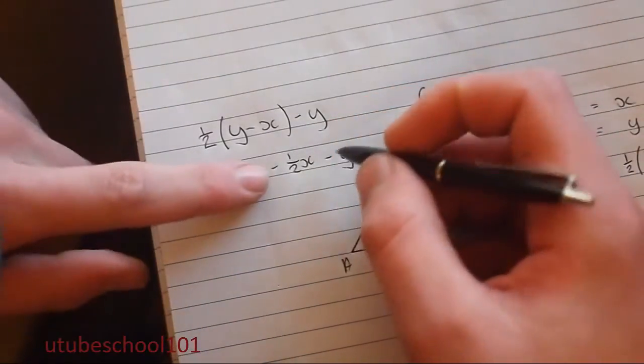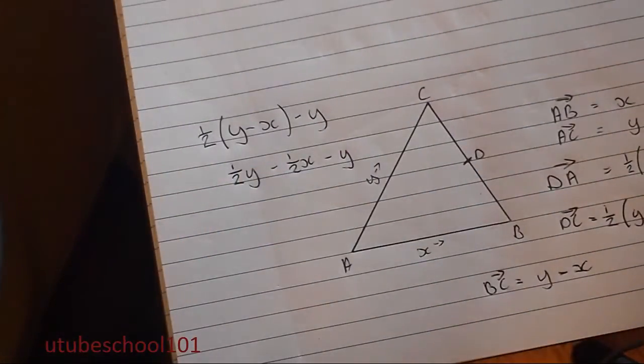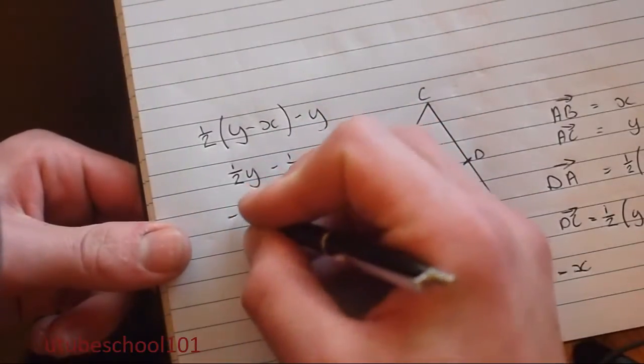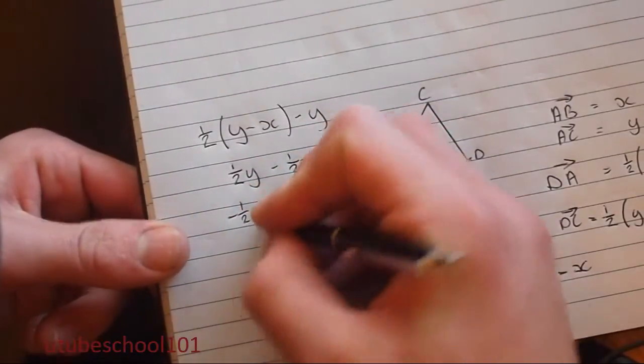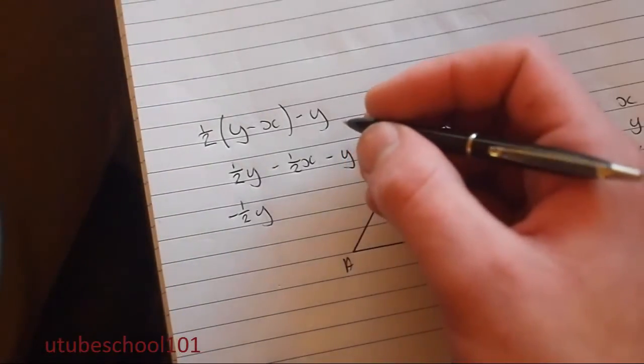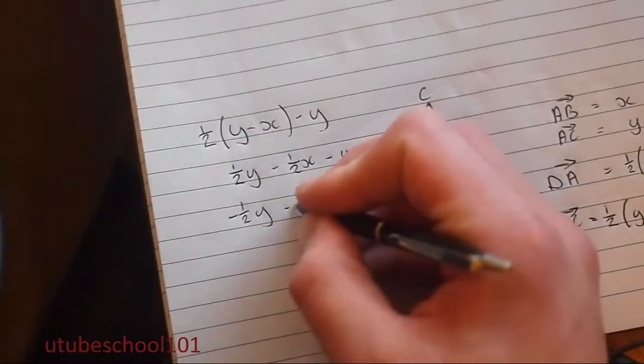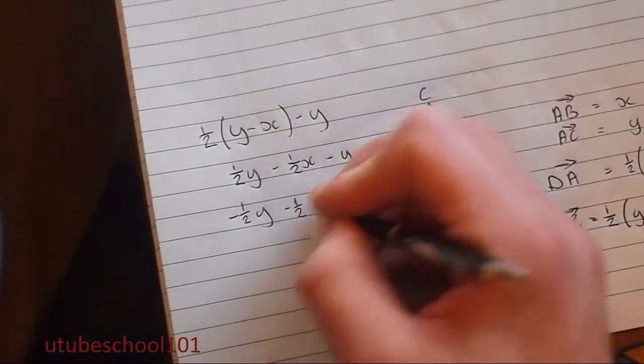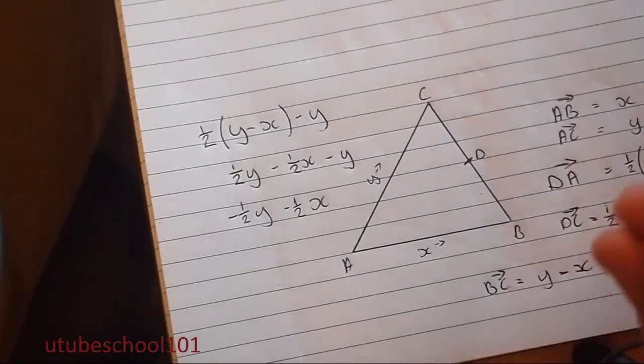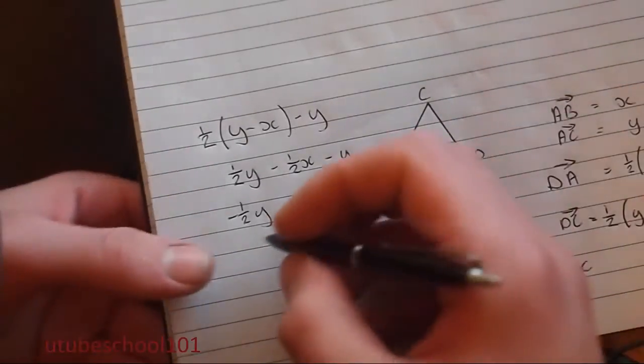So you get half of Y take away half of X minus Y. So we can take away the Y from the half Y, and that's going to equal minus a half Y. Because you've got positive half Y. You go one whole Y in a different direction, and you get minus half Y. So you get minus half Y take away minus half X.